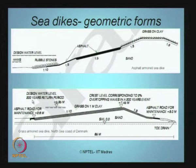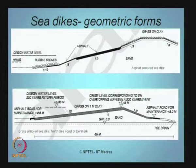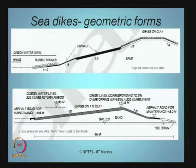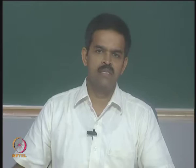The design water level for sea dikes is calculated for approximately a 200-year return period. The crust level overtopping can be managed with grass over 1 meter of clay, using bonded material as armor for slope protection. The seaward slope is much more gentle compared to the leeward slope. At the end of the slope, a toe drain collects run-up from the surface, which can be reused for maintaining the sea dike.